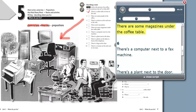Five, there are some magazines under the coffee table. Six, there's a computer next to a fax machine. Seven, there's a plant next to the door.